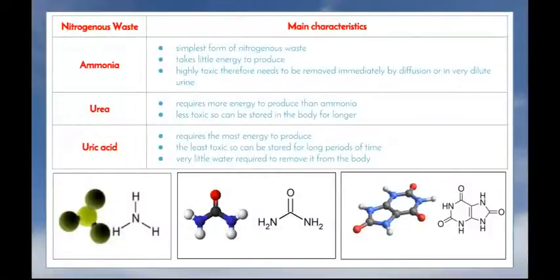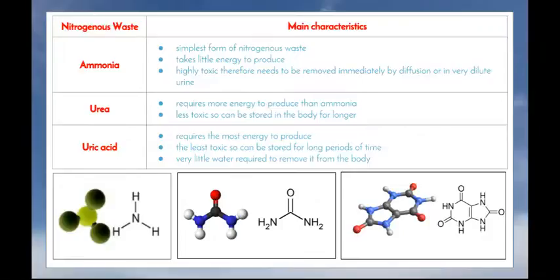There are three main types of nitrogenous wastes. Ammonia is the simplest form and takes very little energy to produce, but it's highly toxic - so it needs to be removed immediately by diffusion or excreted in very dilute urine. Urea, which is the main nitrogenous waste we produce, requires more energy to produce than ammonia; however, it is less toxic and therefore can be stored in the body for a longer period. Lastly, uric acid requires the most energy to produce, is the least toxic, can be stored for long periods, and little water is required to remove it from the body.